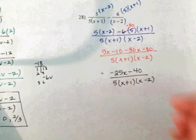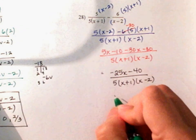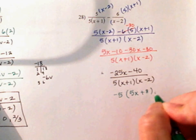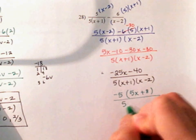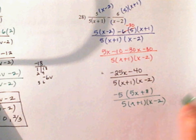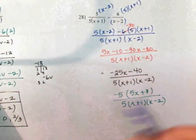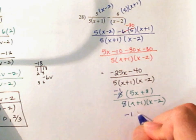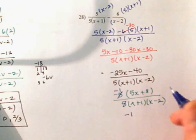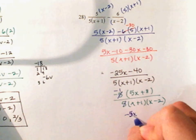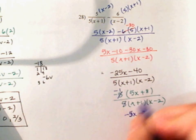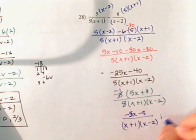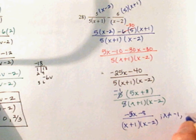What can you factor out from your numerator? A negative 5. When you do that, guess what you have? 5x plus 8. All of that over 5 times x plus 1 times x minus 2. Guess what happens to your 5? They cancel out. So your final answer is negative 5x minus 8 over x plus 1 times x minus 2. And x cannot be negative 1, and x cannot be positive 2.